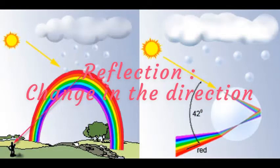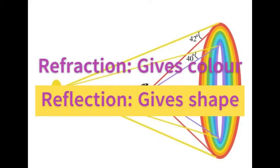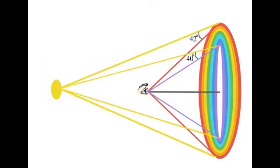Now let me quickly explain what it is. Refraction gives you the colors of the rainbow and reflection gives you the shape when the sunlight reflects from the droplet of water at an angle of 40 to 42 degrees.